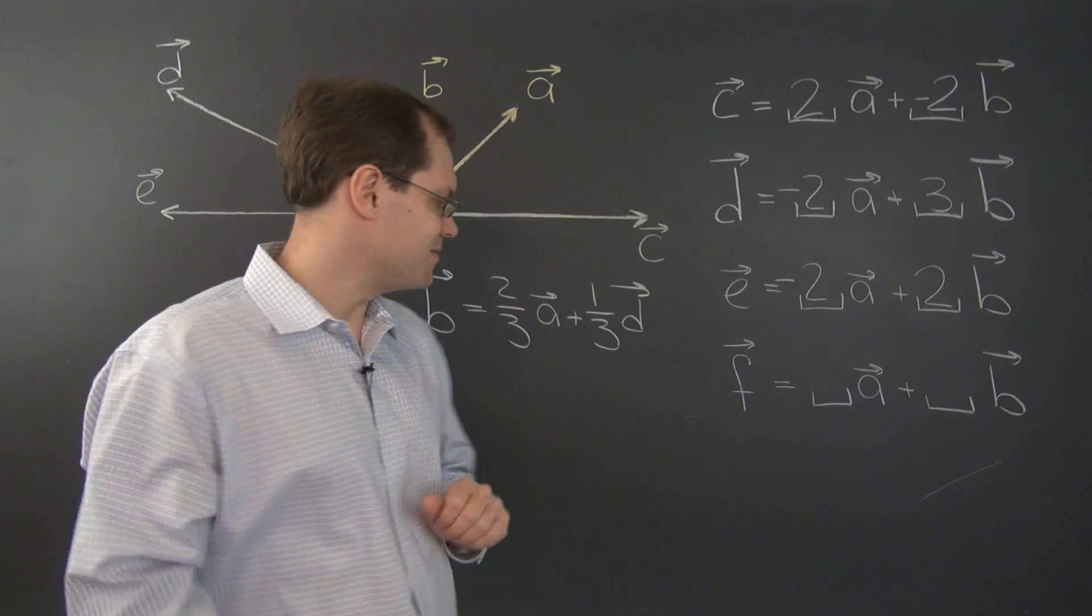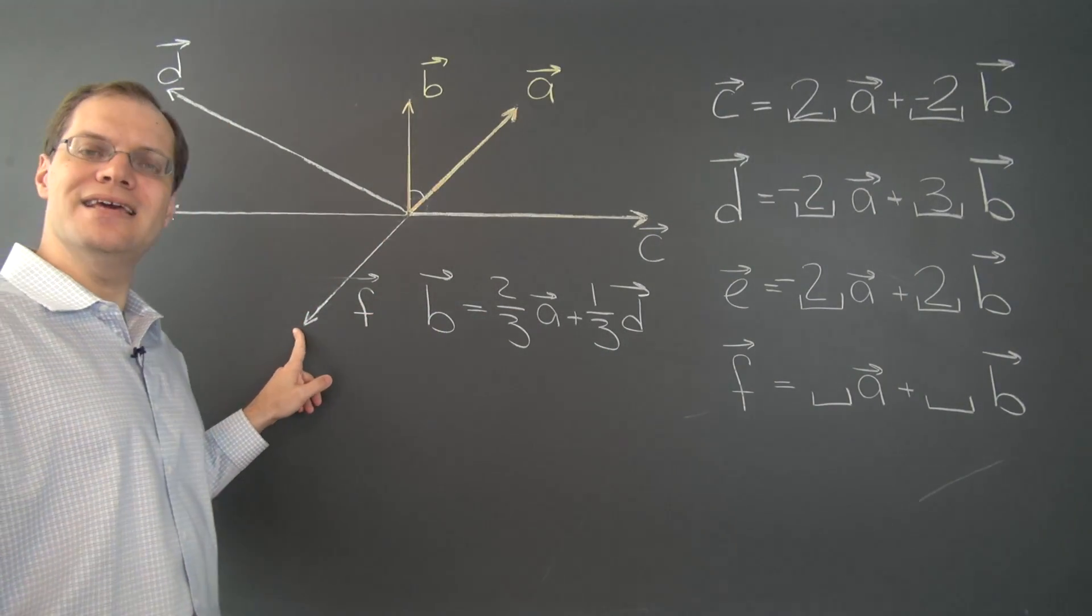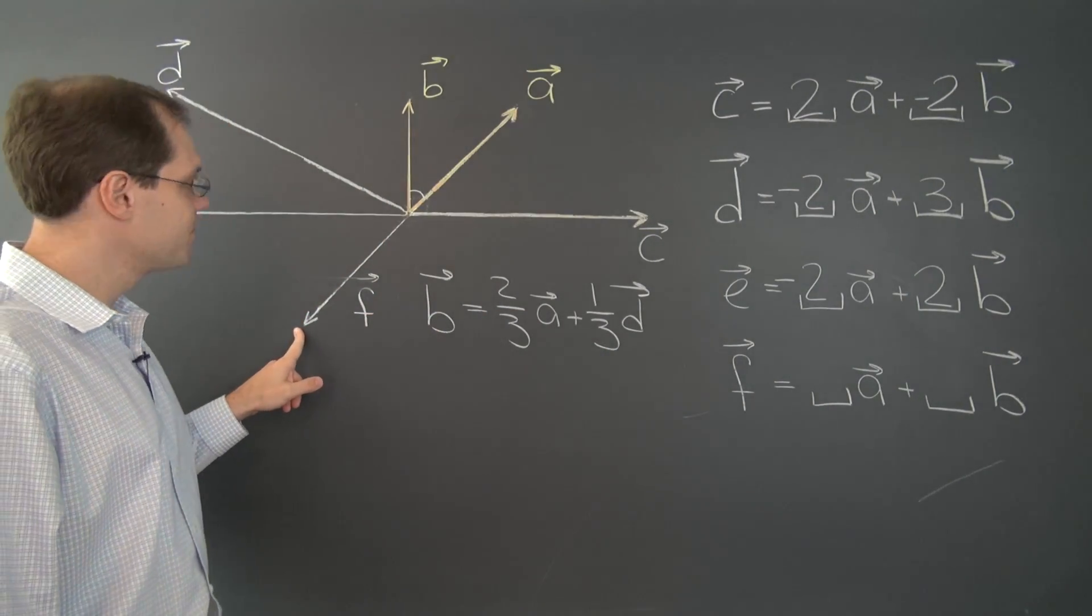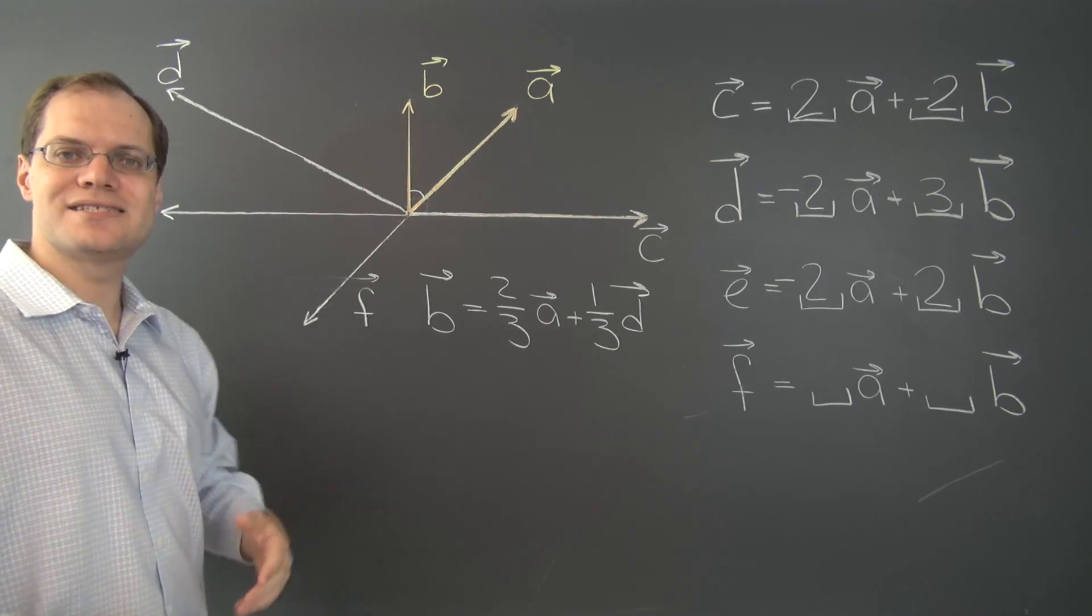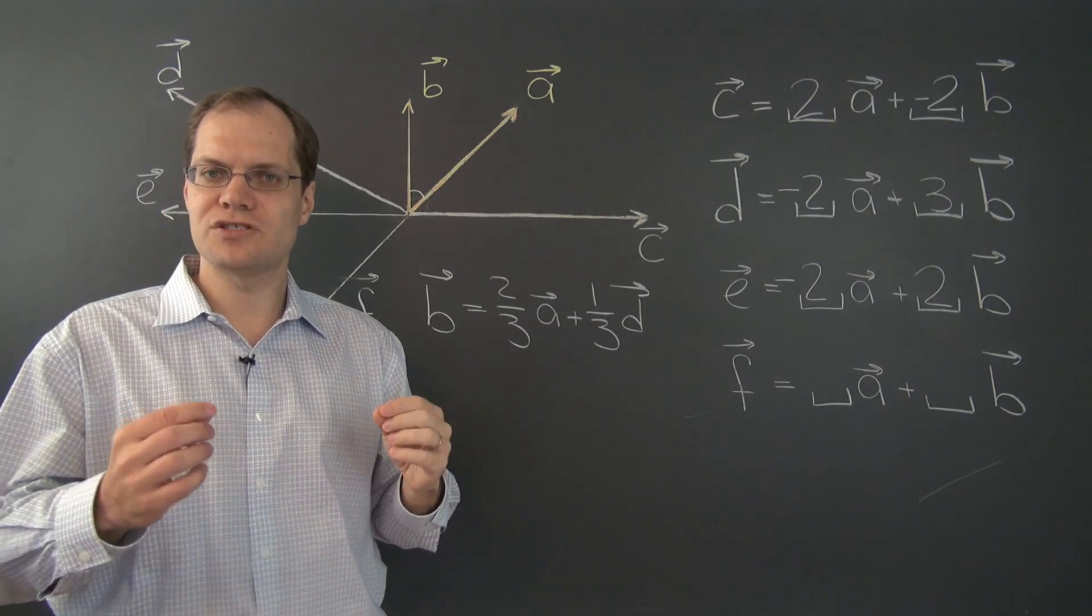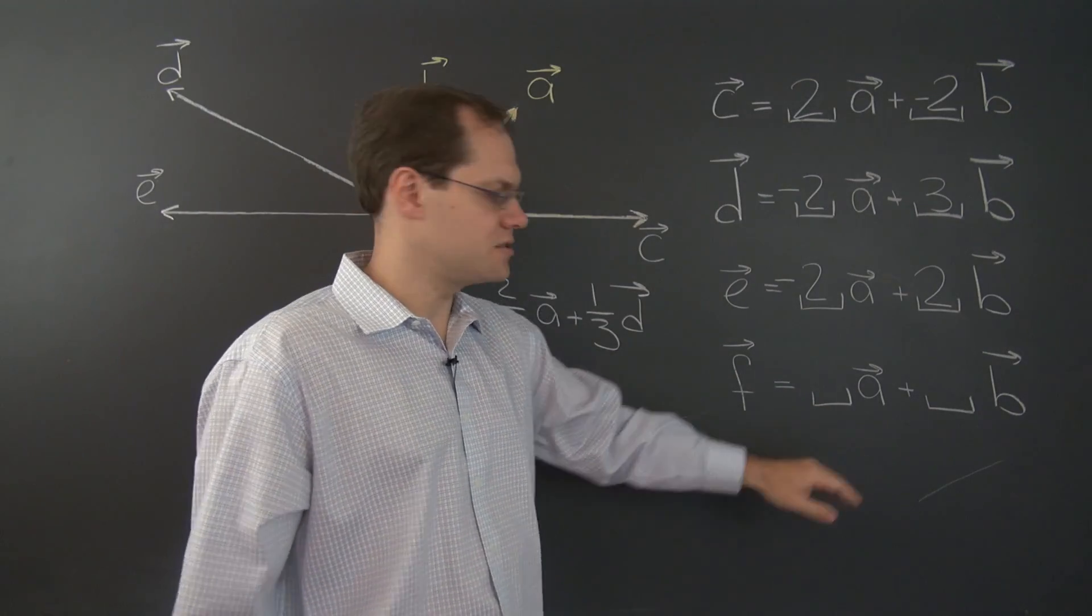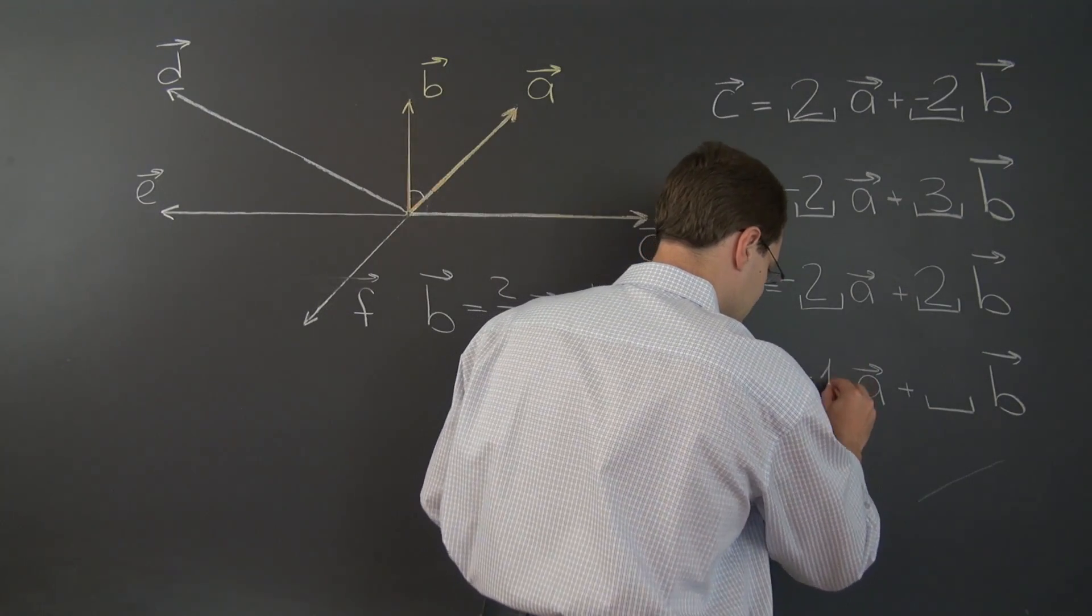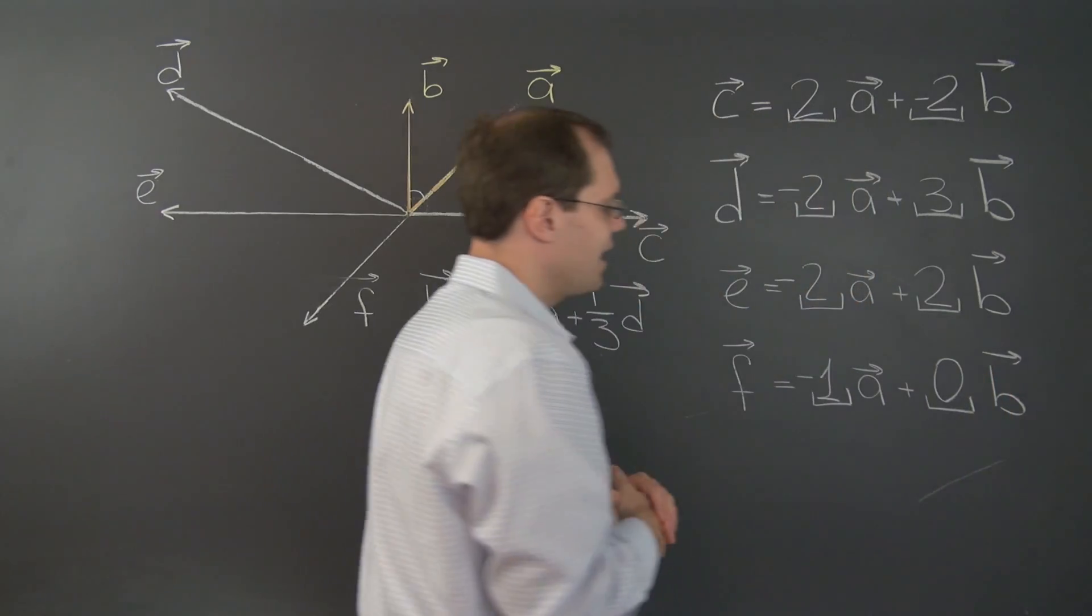Let's move on to the last one. We have f, f is right here, the easiest of them all. Because it points in the opposite direction and has the same length as a, it's simply minus a. And it's just another example of a situation where we only need one of the vectors. So it gets the appropriate coefficient, and the other one gets the coefficient of 0. And there you go.